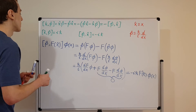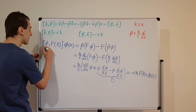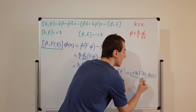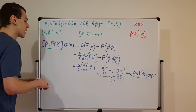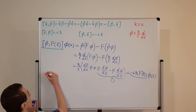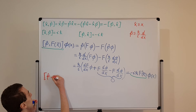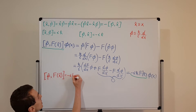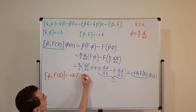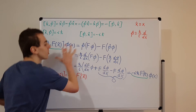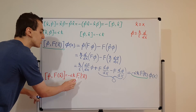Now let's identify something very important. This commutator acting on the test function equals this combination acting on the function. So we can conclude this very special relationship: the commutator of momentum with a function of position equals minus iℏ times the derivative of that function — that is, [p̂, F(x)] = -iℏ F'(x). That prime notation signifies the derivative, and this is what we've concluded from the entire blue derivation.